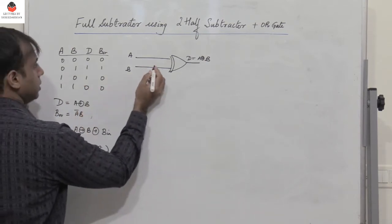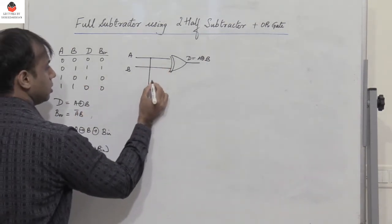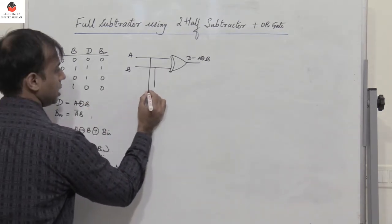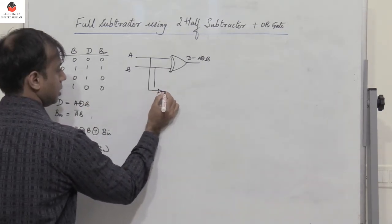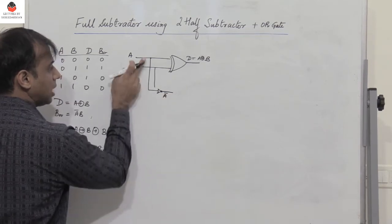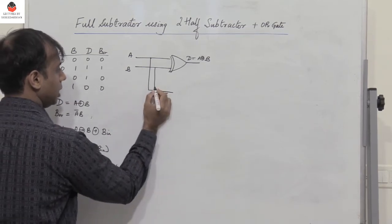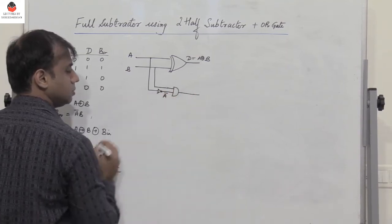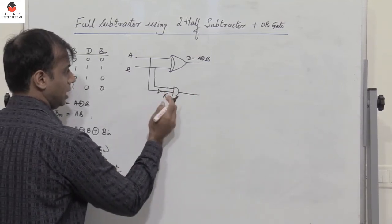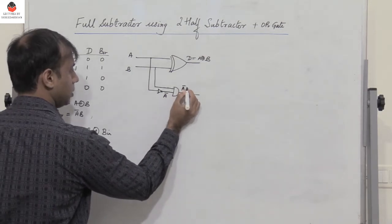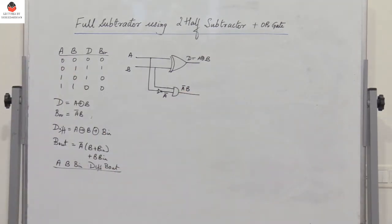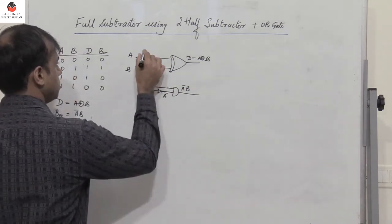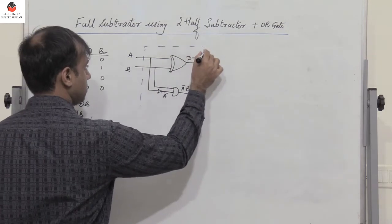The intermediate borrow is nothing but A̅B. So I pass A through an inverter to get A̅, and then A̅ and B are both passed through a two-input AND gate, which gives me A̅B. This is the first half subtractor, HS1.